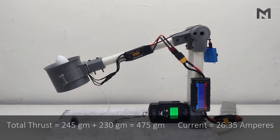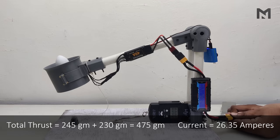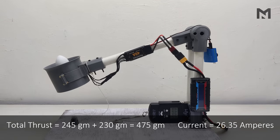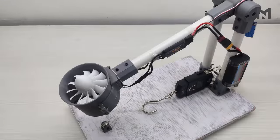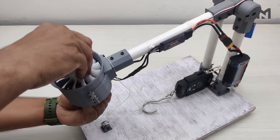We get the maximum thrust at 245 grams at 26.35 amperes, and on adding the ideal weight we get a total thrust of 475 grams at 26.35 amperes. Now the thrust test has been completed and it's time to check the cooling rate of the motor. I will check the temperature difference between the motor with and without the diffuser part.